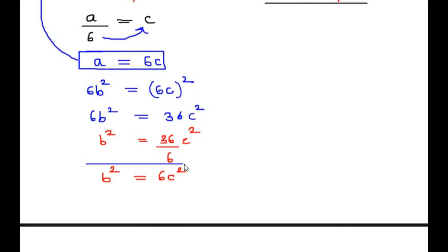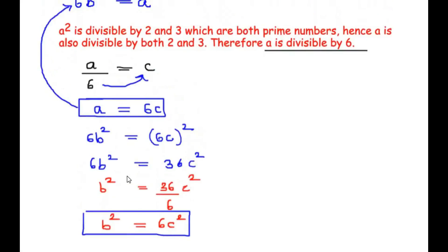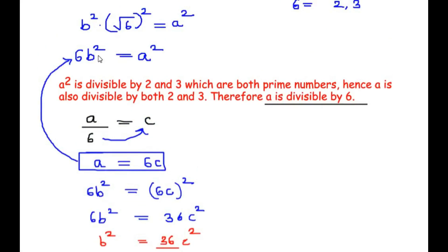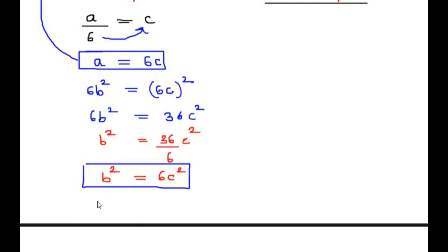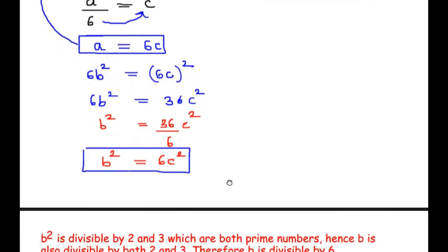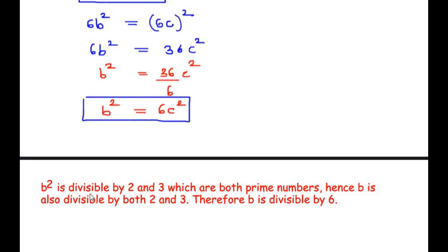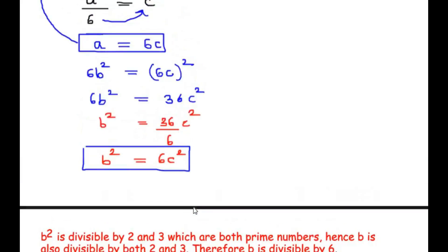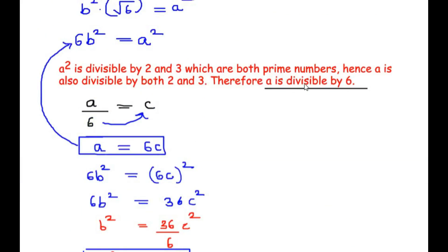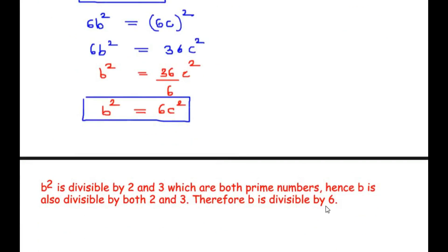Now let us focus on this equation. This says that 6 divides b squared, in the same sense as we said that 6 divides a squared. So b squared is divisible by 2 and 3, the prime factors of 6, which are both prime numbers. Hence b is also divisible by both 2 and 3, therefore b is also divisible by 6. Now we can see that a is divided by 6 and b is also divided by 6.